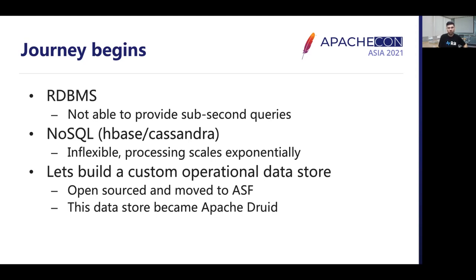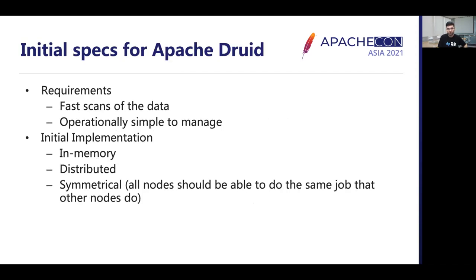After evaluating a few other options and exhausting the available solutions at that time, the team took the hard decision of building their own operational data store. It was later open sourced and moved to the Apache Software Foundation. This data store became Apache Druid.